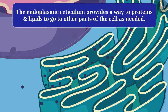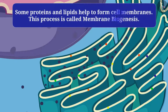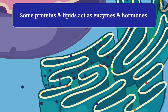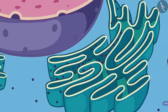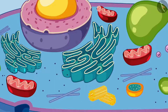Smooth endoplasmic reticulum helps in the formation of fat and lipid molecules. The endoplasmic reticulum provides a large surface for synthesis of protein and lipid inside the cell and also transports them to other parts of the cell as needed. Some proteins and lipids help to form cell membranes — this process is called membrane biogenesis. Some proteins and lipids act as enzymes and hormones.